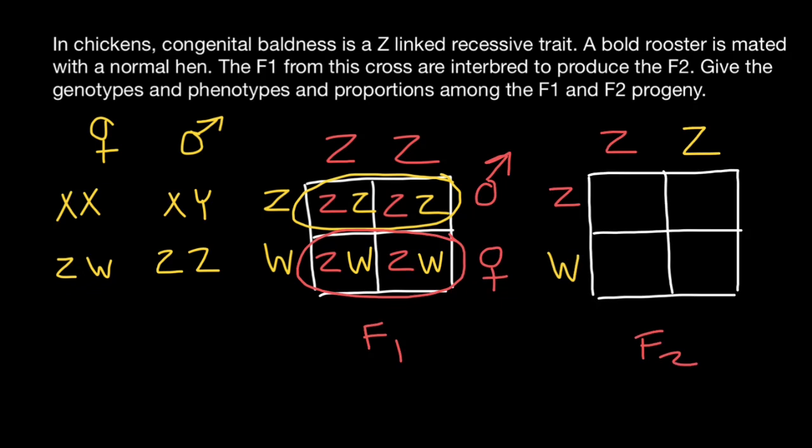Let's take a look at what's going to happen in the F2 generation. Defective Z chromosome from the hen side and defective Z chromosome from the rooster side. Defective Z chromosome from the rooster side and normal W chromosome from the hen side. Defective Z chromosome from the hen side and normal Z chromosome from the rooster side. Normal Z chromosome from the rooster side and normal W chromosome from the hen side.